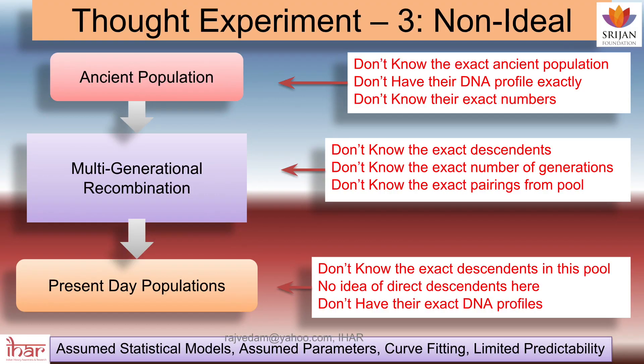This is where we are today. You don't know the ancient population, you don't have the DNA profile exactly, you don't know the exact numbers, you don't know the exact descendants, you don't have the exact number of generations, don't know who married whom, no idea if only direct descendants are here, you don't have the exact DNA profiles either. So this is the model which people have today, and it is this model that they are applying mathematics to, giving you an answer and claiming to write these global papers with global claims about who came to India at one time frame and where.